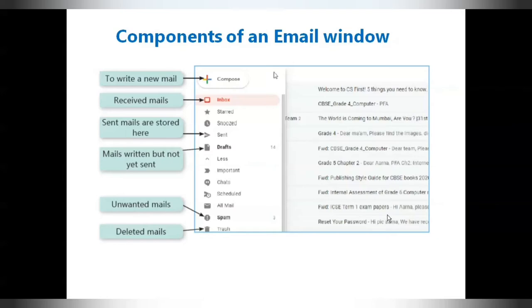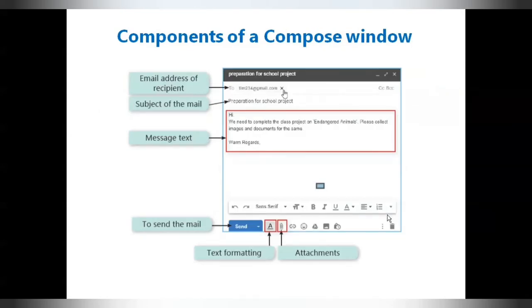Different components of the compose window: To box - we give email address of recipient whom you want to send the mail. You can send the same mail to more than one person by typing their email addresses here separated by commas. CC and BCC: CC stands for carbon copy. It is used to add an email address of the recipient who should receive a copy of the mail. The email address mentioned in the CC are visible to all the recipients. BCC stands for blind carbon copy. It is also used to add email addresses of the recipient who will receive a copy of the mail. However, the email address of other recipients mentioned in this field are not visible to the receiver.